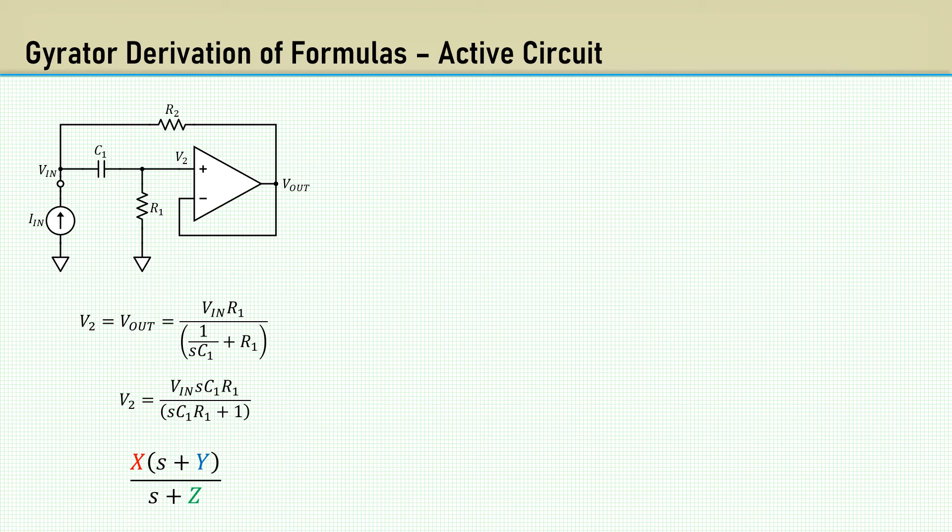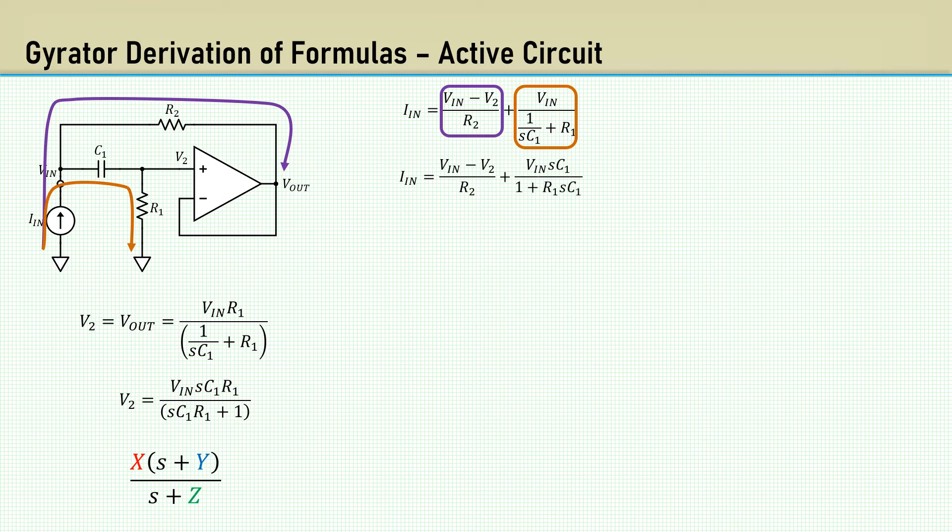The input current has two paths. One path is through R2. Since V2 equals Vout, the current is Vn minus V2 over R2. The second path is through C1 and R1. Making the standard assumption that no current flows into the op amp non-inverting input, the current through C1 and R1 is Vn over the sum impedance of C1 and R1. Multiplying the top and bottom by the right side by SC1 to eliminate the fraction. We will now replace V2 with the equation we made for V2 from here.